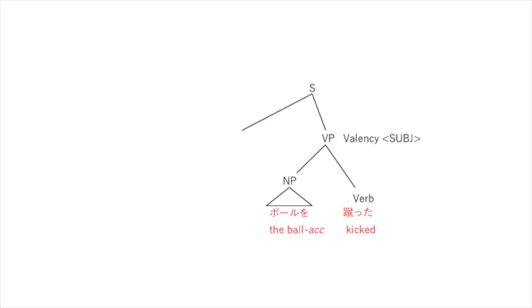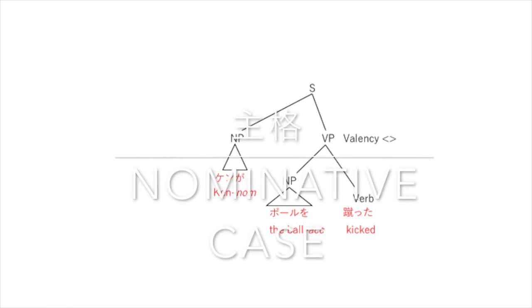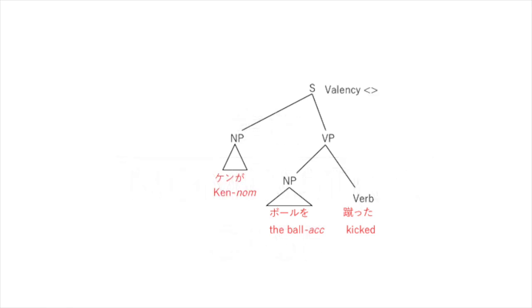Here's the subject coming up. It's a noun phrase: ken ga. That's nominative case — it marks the noun as a subject. It's a sentence now, with an empty valency list.